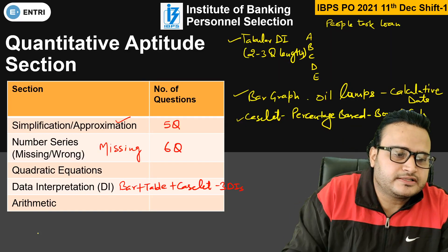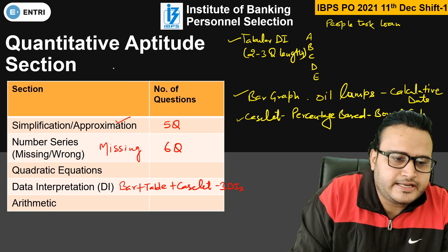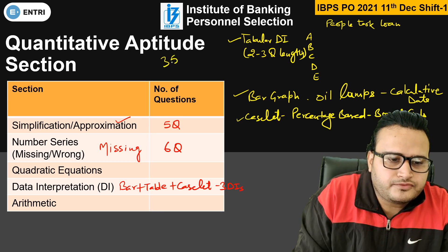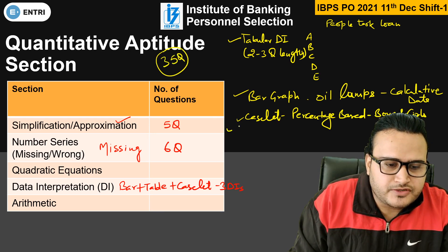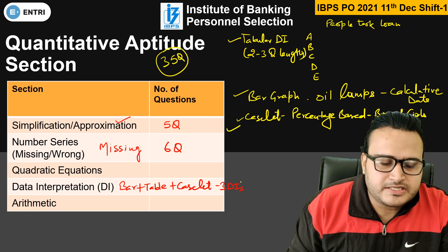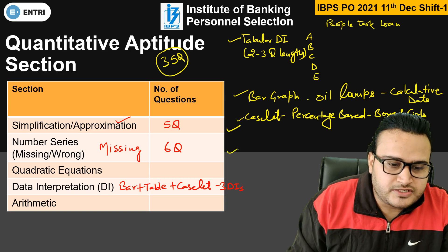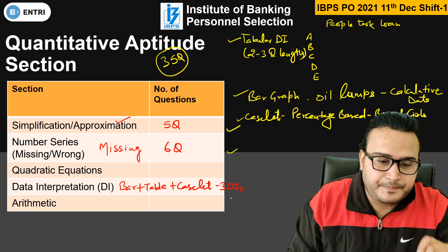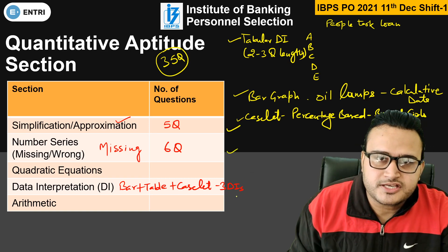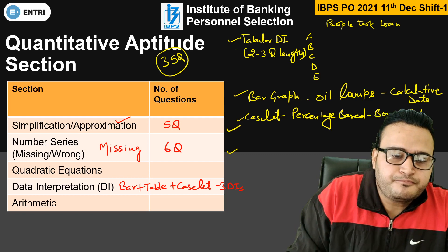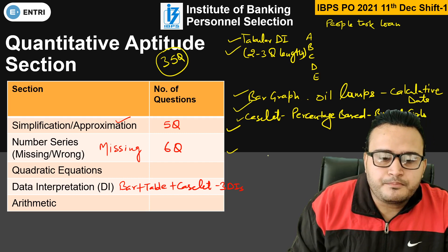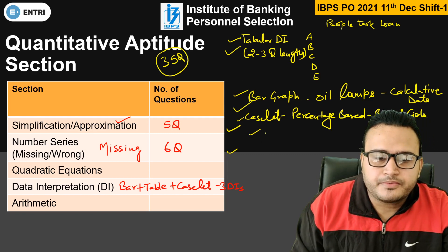First, let's see what was there in the Quantitative Aptitude section. Total out of 35 questions, we saw 5 questions from approximation, 6 questions from the missing number series. Data Interpretation had 15 questions — 5 from tabular, 5 from bar graph, and 5 from caselete DI.